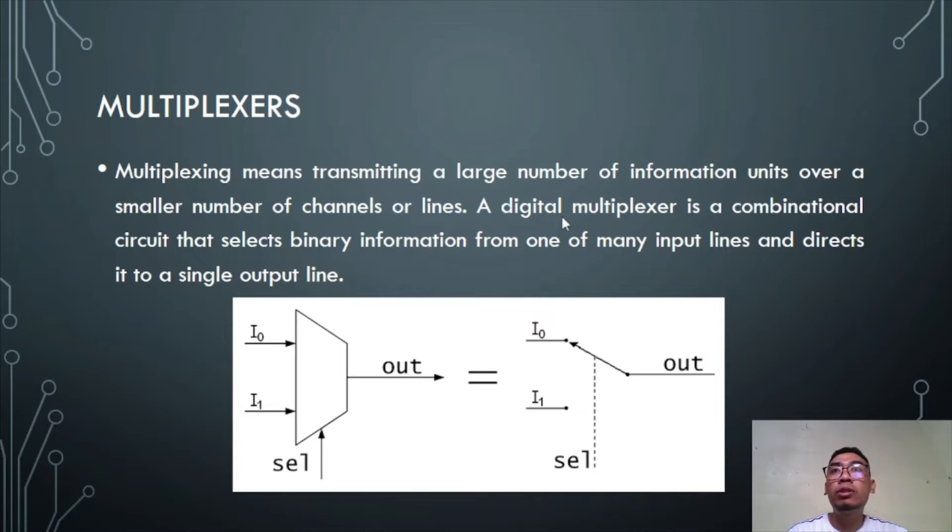A digital multiplexer is a combinational circuit that selects binary information from one of many input lines and directs it to a single output line. This figure represents a two-to-one multiplexer with two inputs I0 and I1, one output, and a select pin denoted by SEL that determines which input connects to the output.